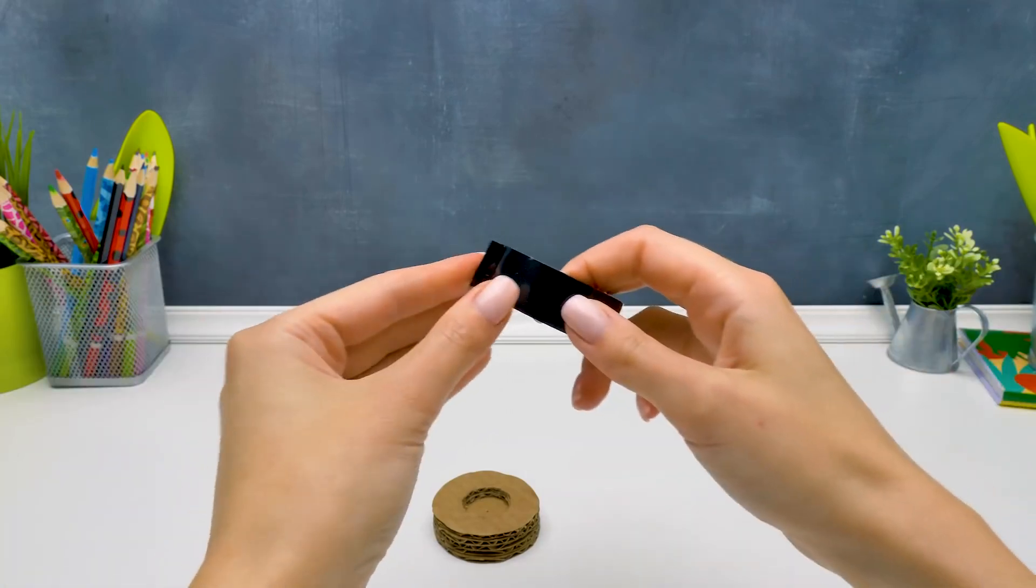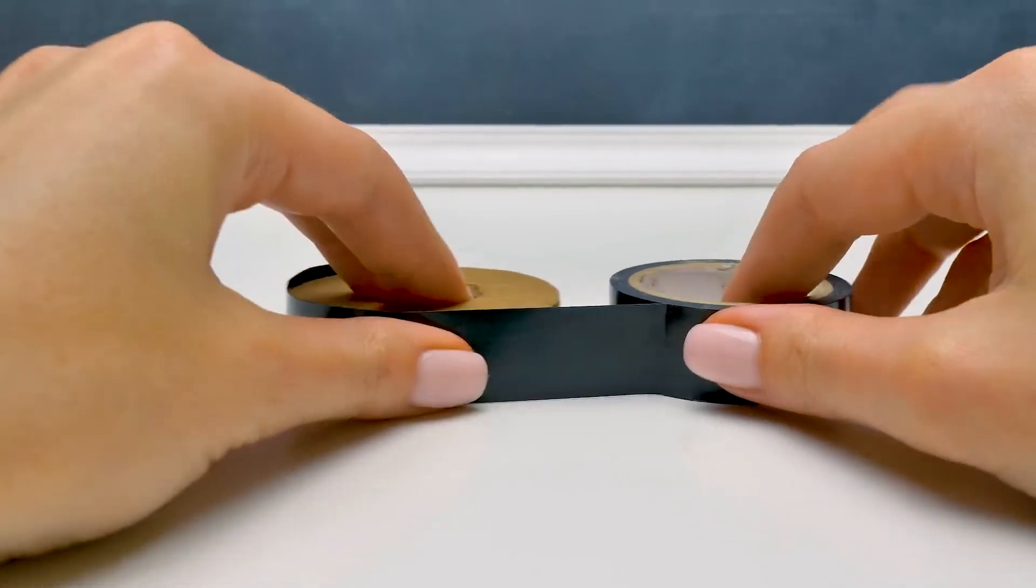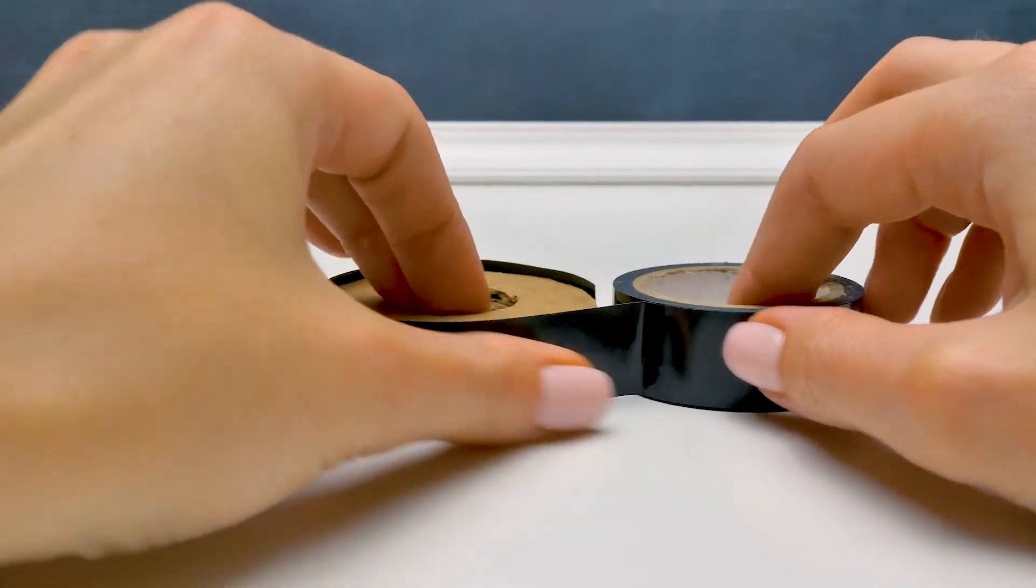And done! Now our wheel needs a tire! We'll use the duct tape to make it! Repeat after me! Spin it this way! Great! Now let's cover it completely!